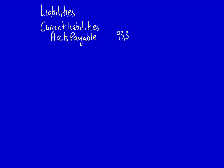Accounts payable is $93,333. Then you can do the remaining items in pretty well any order, although I tend to put all the payables first and then the current portion of long-term debt. The next account I have is salaries payable — this is all from the listing which we categorized at the beginning of the question — $5,703.